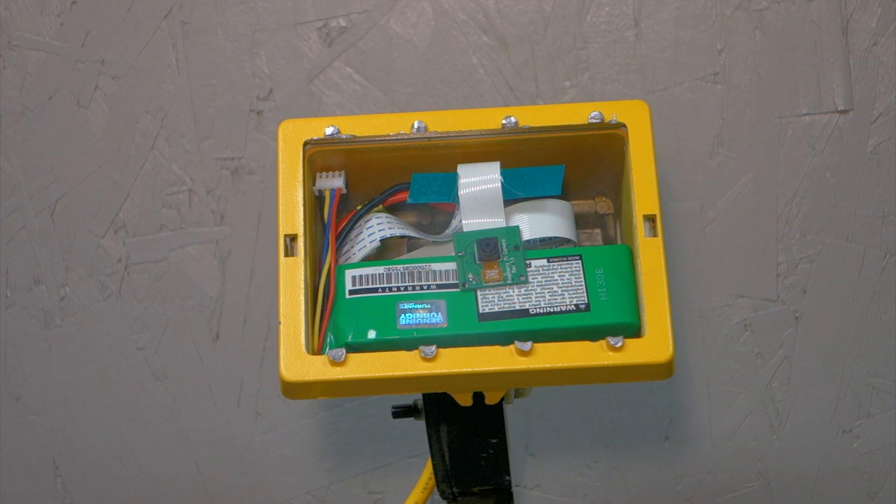This is a makeshift outdoor enclosure fitted inside a flood lamp. The reason this is cool is that you can buy a flood lamp from Home Depot for eight dollars, gut it, and have a perfectly sealed outdoor Raspberry Pi case.